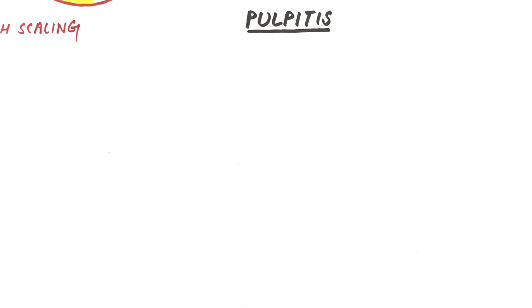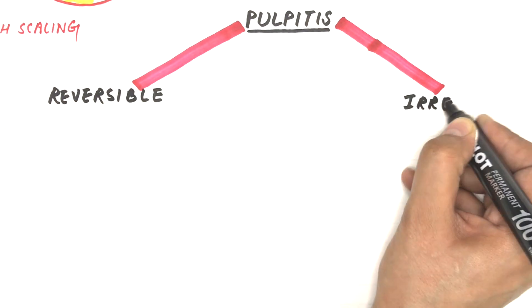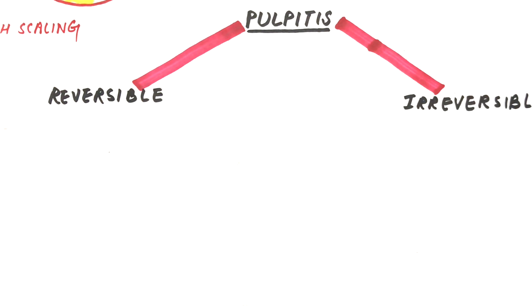Pulpitis can be divided into reversible and irreversible pulpitis. In reversible pulpitis, the tooth pulp is able to return back to its normal state whereas in irreversible pulpitis, as the name suggests, it cannot return back to its normal state.